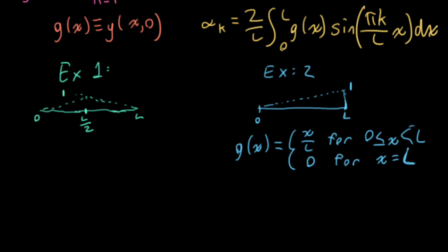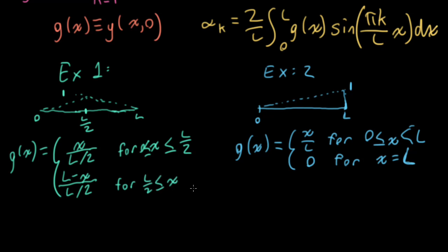All right, for example 1, the expression is going to be a little bit more complicated. Here I really have two meaningful parts. So I'll write something like x over l over 2. So I could write this as 2x over l, but I think it's a little clearer if you write it like this for x between 0 and l over 2. And then I'll write l minus x over l over 2 for x between l over 2 and l. Notice I can use less than and equal in both places here. I can actually use it everywhere because everything matches up at these transition points. And you can pause the video for a moment, try plugging in l over 2 into these expressions and double check that this all works out.